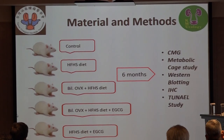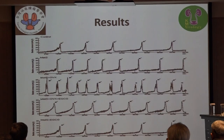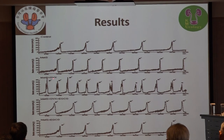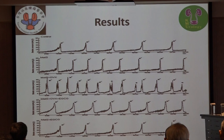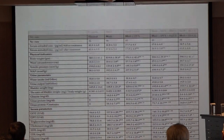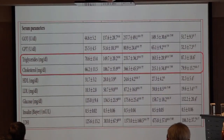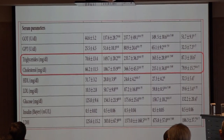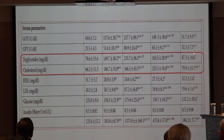Our results showed that after six months of high-fat high-sugar diet combined with ovariectomy, bladder voiding frequency increased, indicating OAB symptoms. Treatment with EGCG decreased voiding frequency. The serum triglycerides and cholesterol increased in the high-fat high-sugar diet group and in the OAB group, and recovered to almost control levels after EGCG treatment. Similarly, glucose levels showed metabolic syndrome development after high-fat high-sugar diet feeding, and EGCG reversed this.